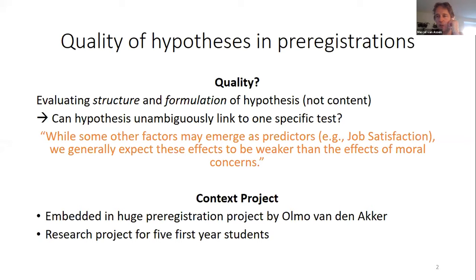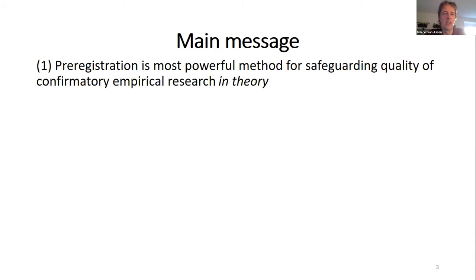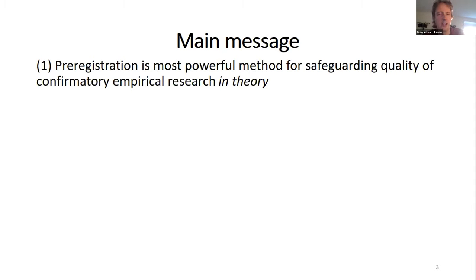So what is the main message? I have three main messages. The first one is that pre-registration is really important — I think it's the most powerful method for safeguarding the quality of confirmatory empirical research in theory. I strongly believe that in a number of years — it can be 10 or 50 — pre-registration will be the standard of the social sciences as it is in medicine.